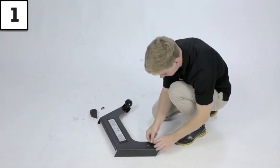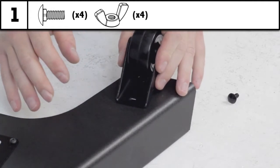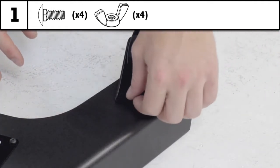Step 1: Using the four carriage bolts and wing nuts, secure the leg levelers and casters in place on the rear leg.